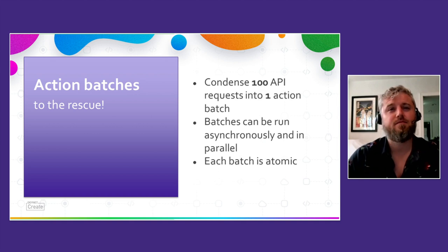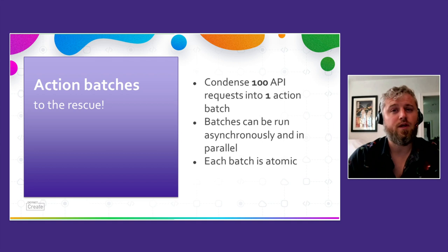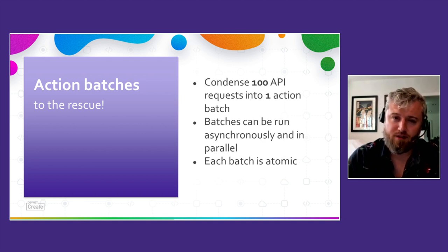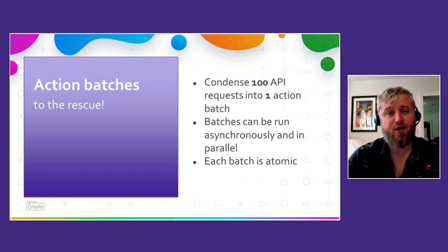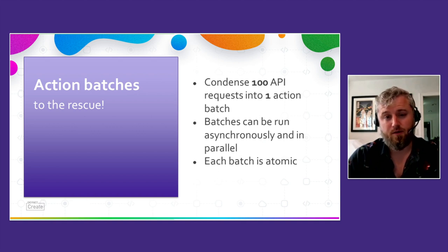So let's revisit our math, using action batches this time, for the same theoretical deployment. Using action batches, conservatively speaking, we can condense two and a quarter million API calls into action batches of 100 each. But let's be conservative — let's say you average 75 actions per batch. In total, you'll have 30,000 action batches to execute. Again, it's still a big deployment. But you can run five action batches at a time inside of a single dashboard organization.